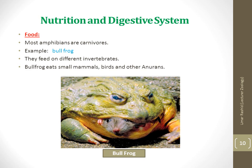Larval stages of anurans are usually herbivores, feeding on pond algae and other vegetable matter. They have a relatively longer digestive tract because digestion of plant matter requires time-consuming fermentation before useful products can be absorbed. Adult amphibians as carnivores consume insects, snails, worms, spiders, millipedes and other small animals.